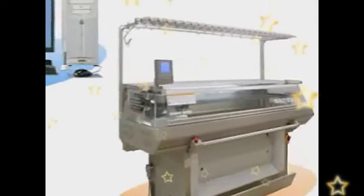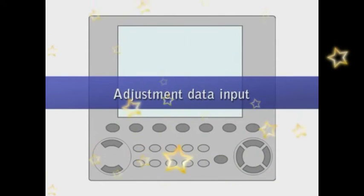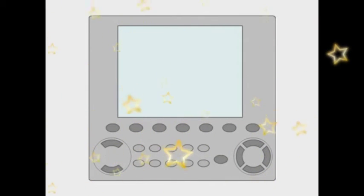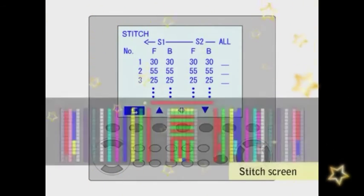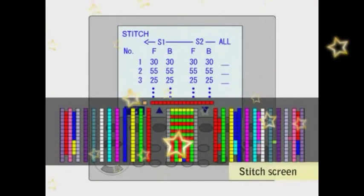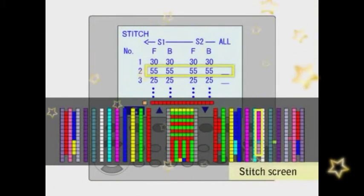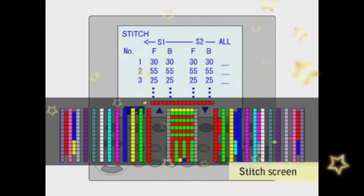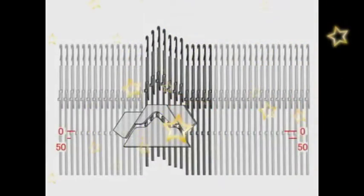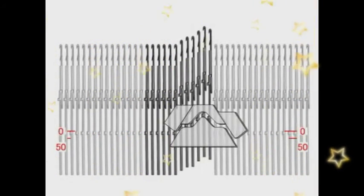Next, entering adjustment data on the operation screen on the knitting machine is explained. Enter the appropriate stitch value on the stitch screen. Decide the loop size used with stitch number set on option line R6. The larger the stitch value becomes, the looser the stitch becomes, as stitch cam lowers.